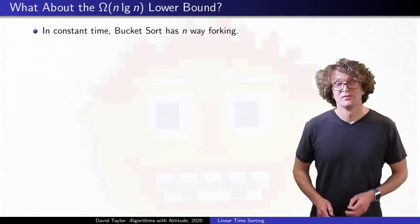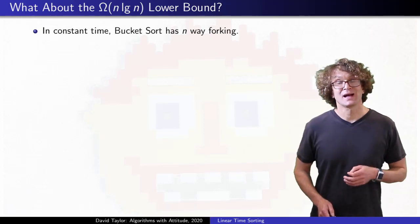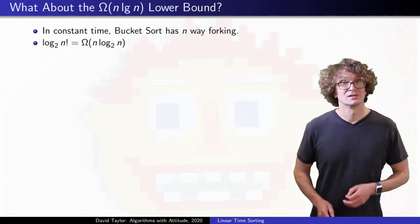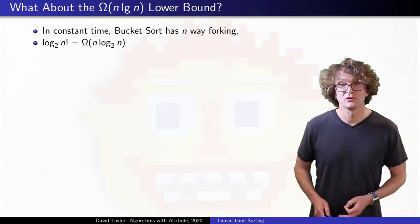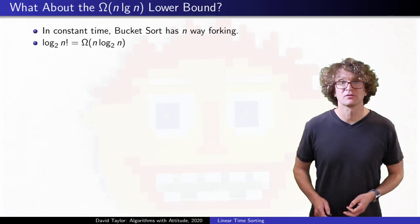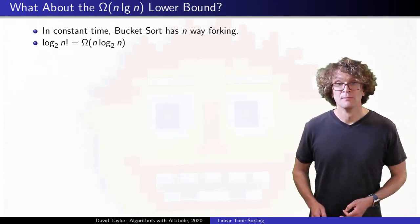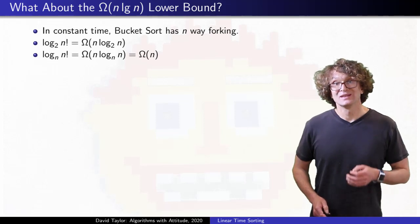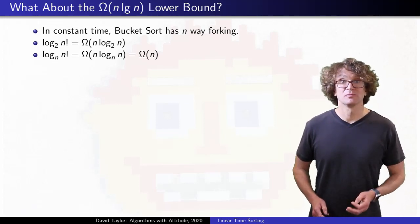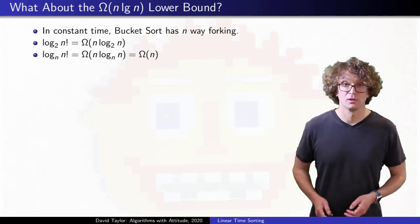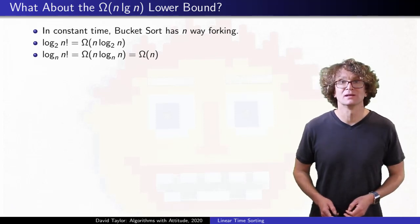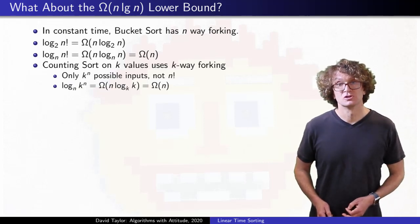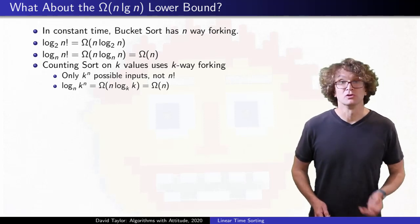Unlike comparison based sorts, that isn't a two way fork, less than or greater than. In constant time, we fork n ways. With the decision tree using two way forks to get to the n factorial possible permutations of n items, the tree would need order log base 2 of n factorial depth to have enough leaves in the tree for all the permutations. But with an n way fork, log base n of n factorial is order n, only giving us a linear lower bound on the runtime. We get a logarithmic speed up in the lower bound. Of course, we can't really sort without looking at the data, so we always expect a linear lower bound to sort with just one processor. Counting sort also uses a bigger fork to beat the n log n lower bound, and of course, radix sort uses counting sort.